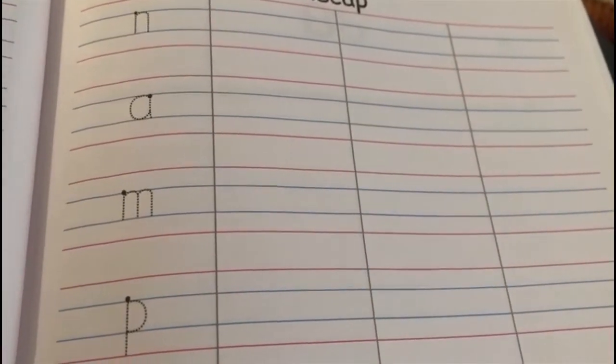On this page, the letters are written like this: n, a, m, p, s, t, o, d. This is page number 53. Now what we have to do is we have to write next to it.